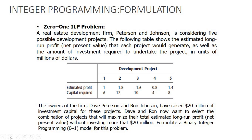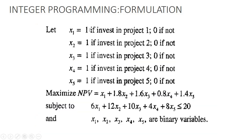Here is another example: the 0-1 integer linear programming, or binary integer programming problem. x sub 1 = 1 if we invest in project 1, and x sub 1 = 0 if not. In this situation, 1 means invested and 0 means not invested. The values of x sub 1 through x sub 5 are all binary numbers.